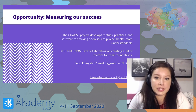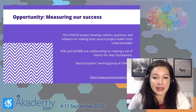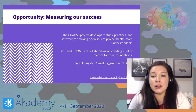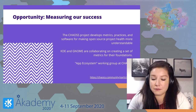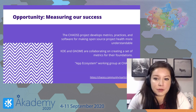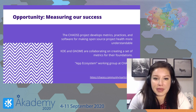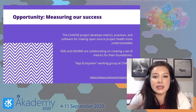We all have annual reports, but this is taking it to the next level. For that, there is a project called the CHAOSS Project. If you haven't heard about it, please check it out — it is focused on developing metrics and practices to help organizations measure their community's health. KDE and GNOME are collaborating on creating a set of metrics specifically for our foundations. I'm part of the working group called the App Ecosystem Working Group — it's open to join. If you are part of another open source project, I encourage you to check out CHAOSS as we continue to mature our organizations.